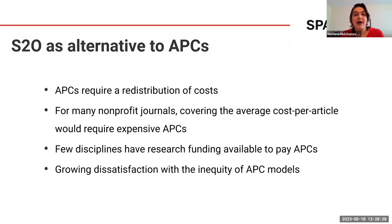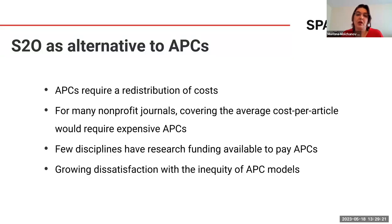S2O is also an alternative to APCs. APCs require a redistribution of costs from readers to authors, and for many non-profit journals, covering the average cost per article would require expensive APCs. In addition, for many disciplines there is no research funding available to pay for APCs. And perhaps most importantly, there is growing dissatisfaction with inequities in APC models — they perpetuate some of the problems of the previous subscription model. If you cannot pay for a subscription, you probably cannot afford an APC either.